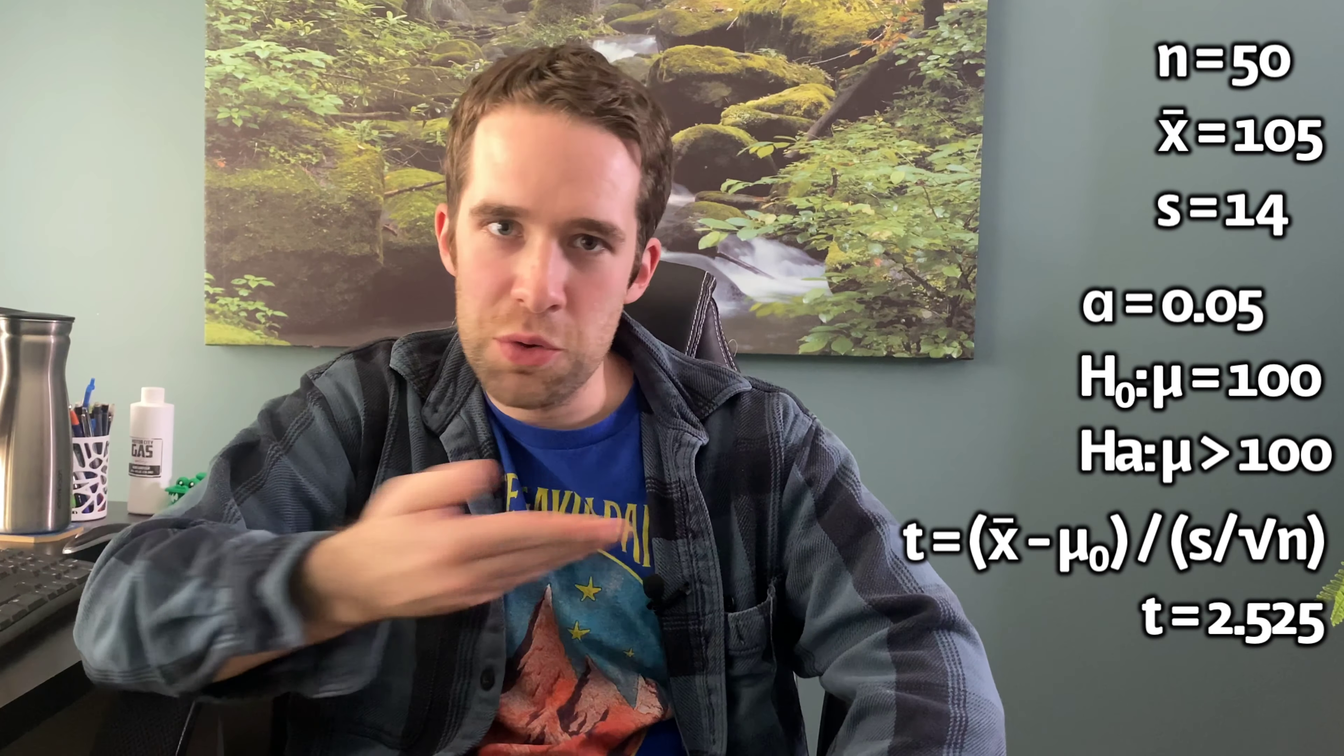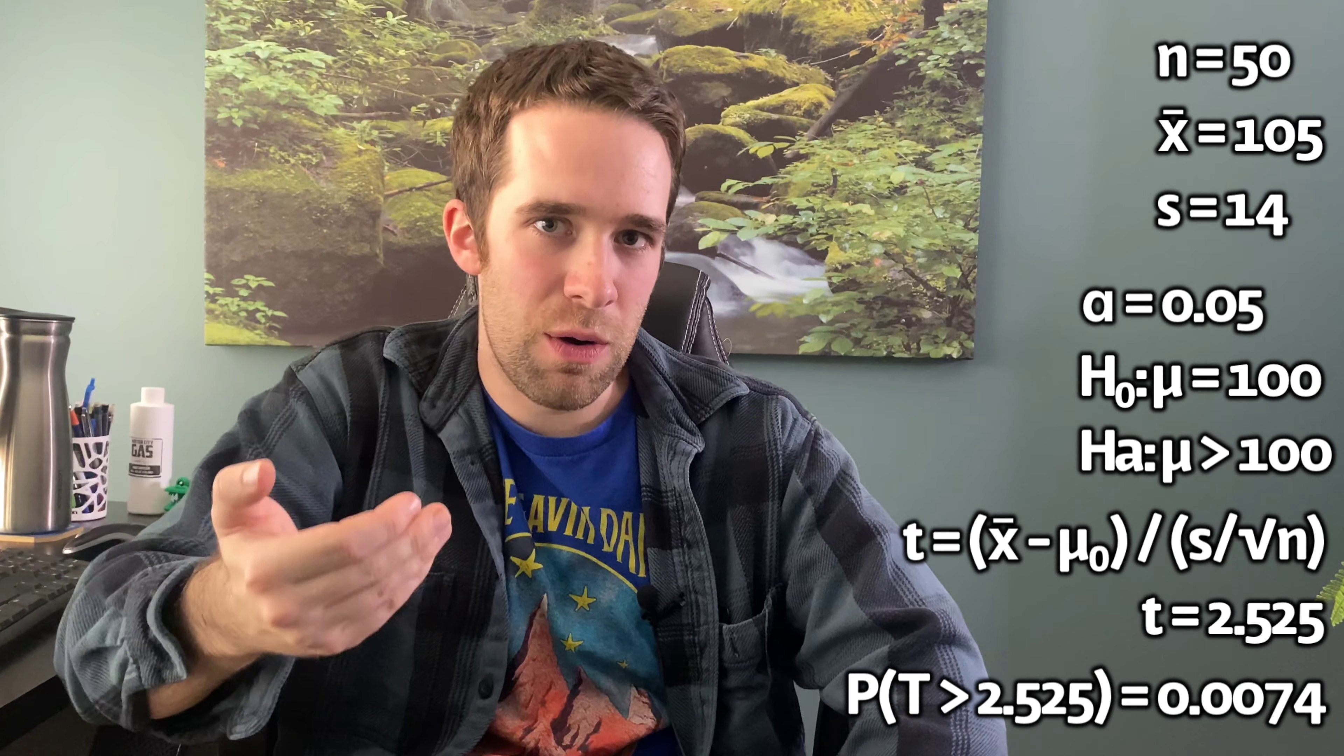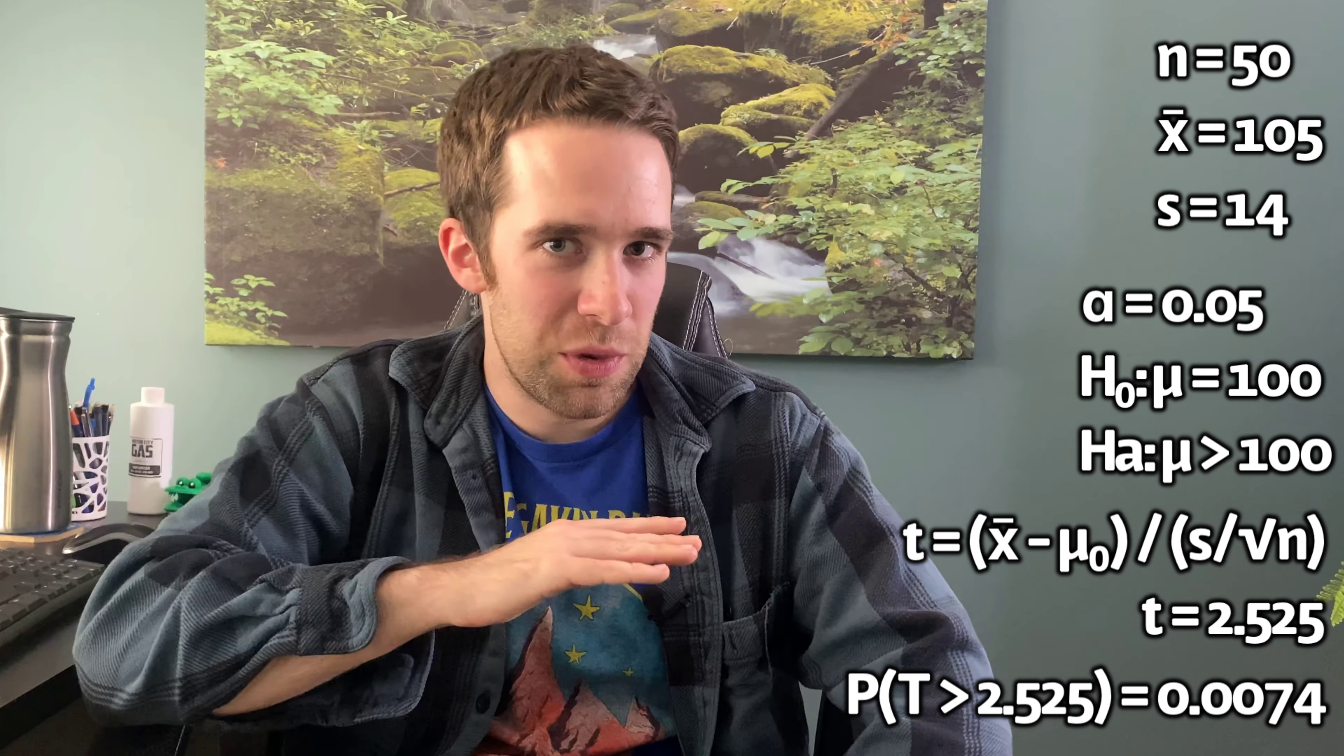Use a table or use R, and we end up with a p-value of 0.0074. That is the area to the right of T equals 2.525. So we soundly reject the null hypothesis, and we conclude that yes, the population mean IQ is greater than 100.